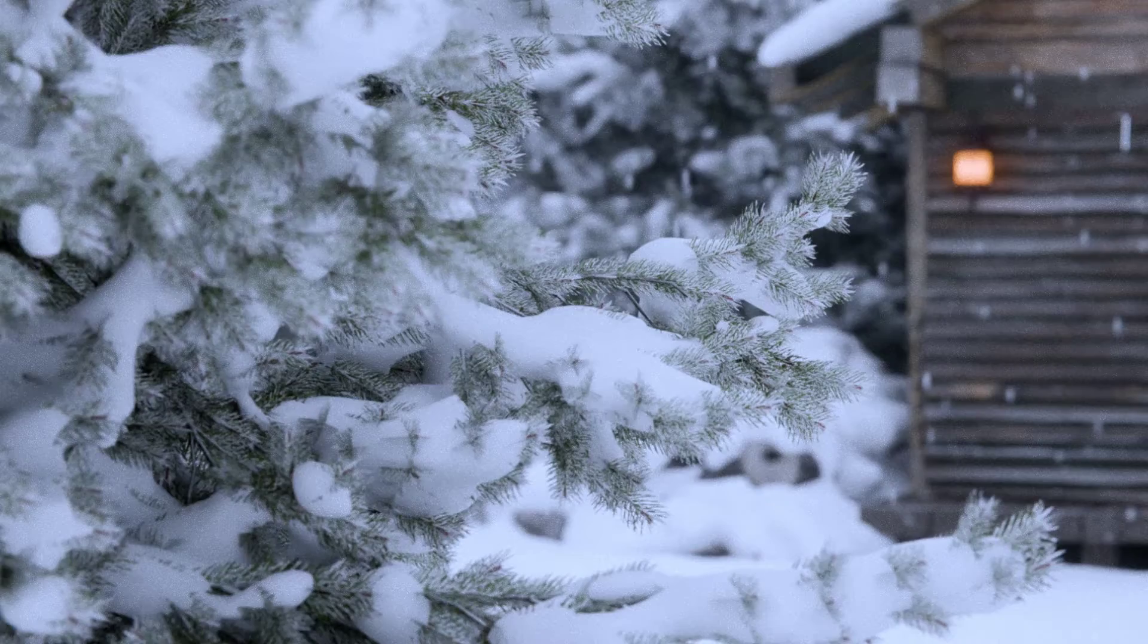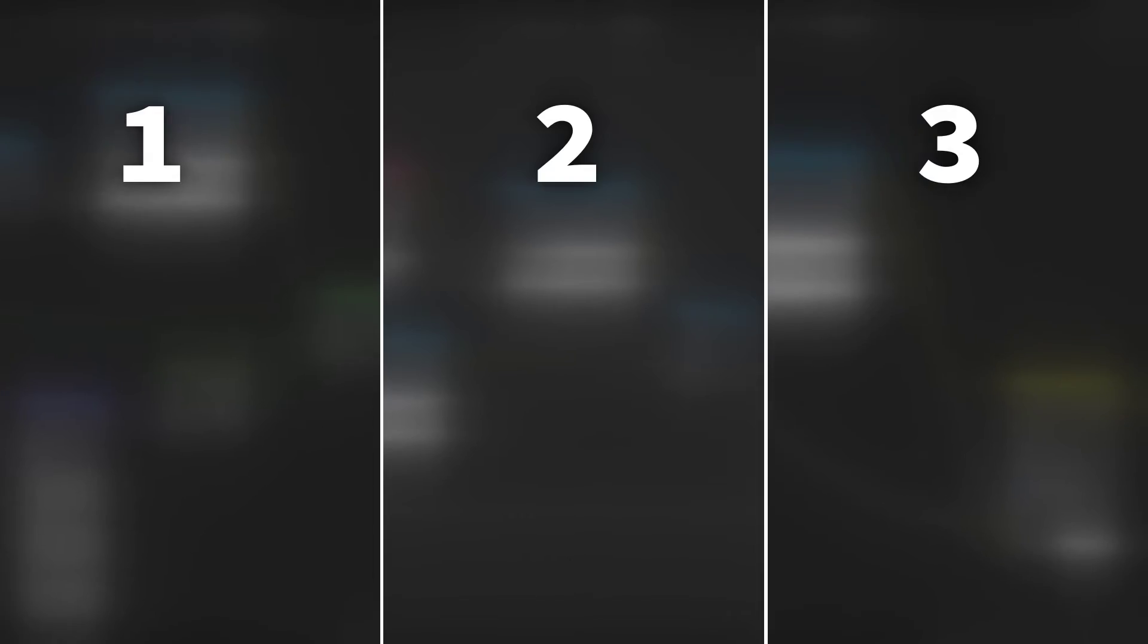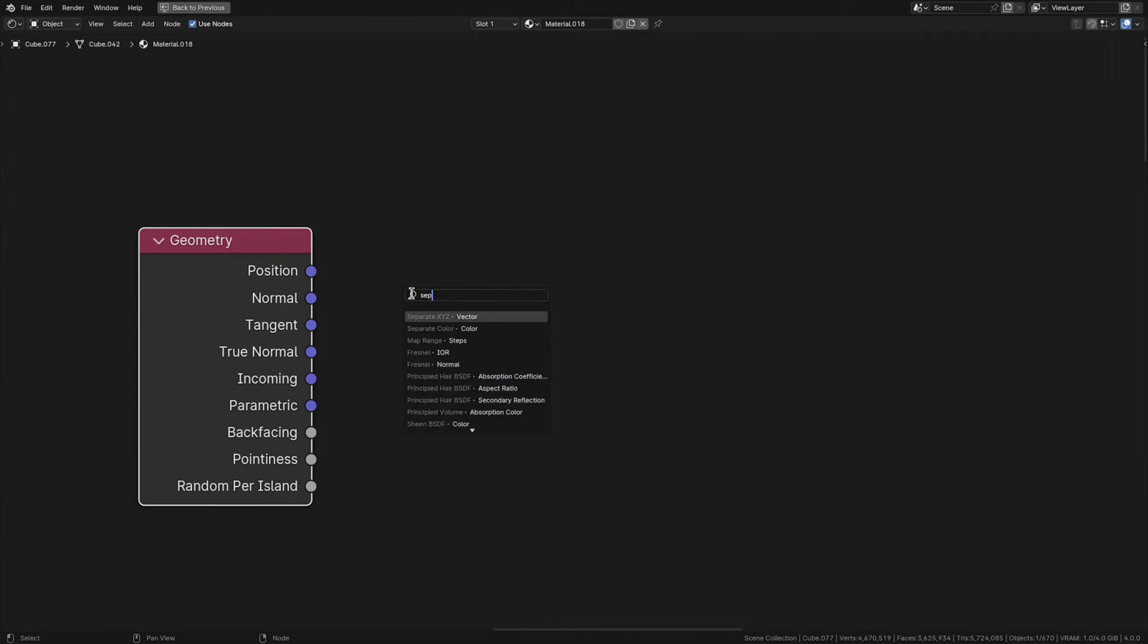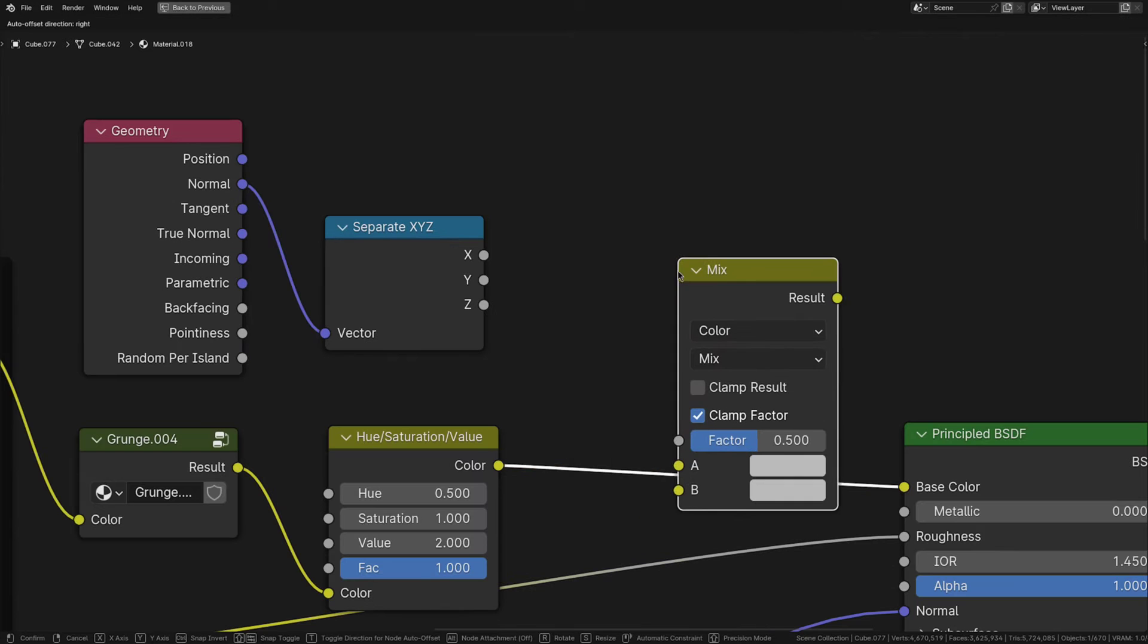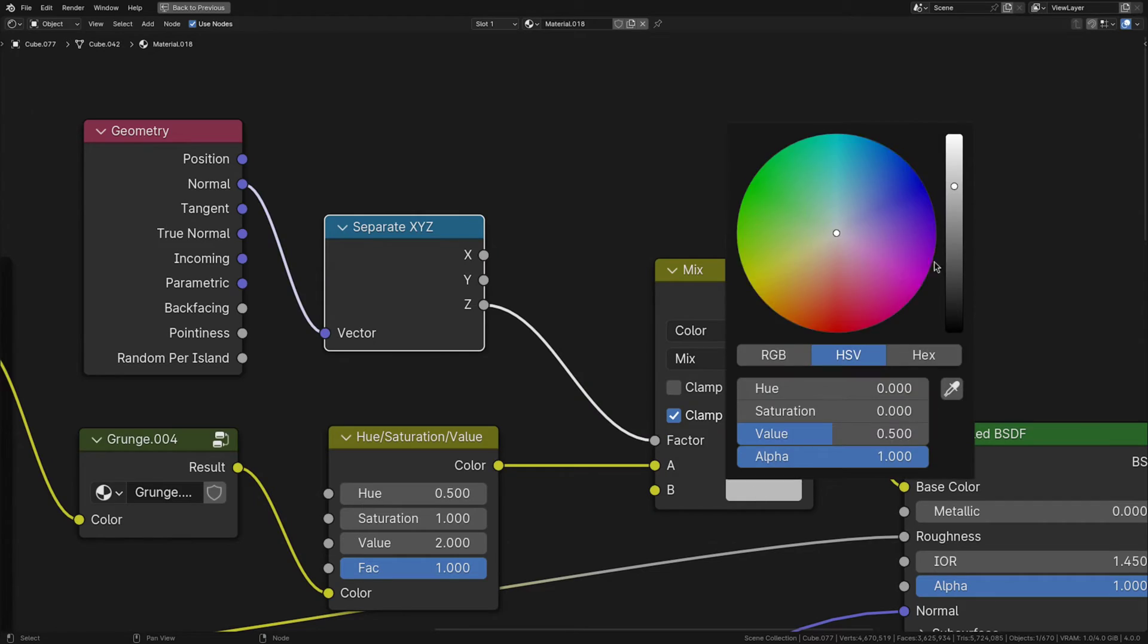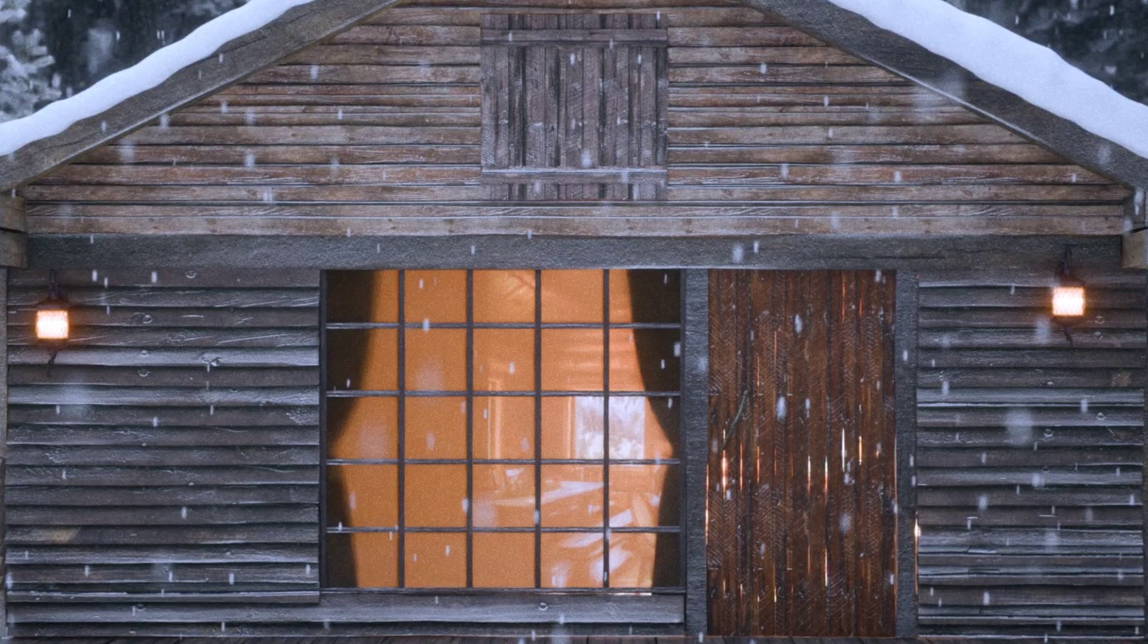But now back to the frost, because here you can choose from three different ways to make the effect based on the situation. The first one is to use the normal output of a geometry node and pass it through a separate XYZ. Then using the Z output as a top mask to mix in some white into the base color. This is the technique I used for most of the house and the tree trunks.